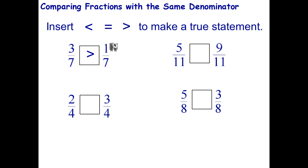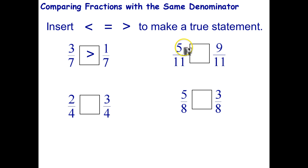Go ahead and do the remaining three questions. Let's have a look at this question here: five-elevenths compared to nine-elevenths. You're better off getting nine slices of pizza rather than five slices, since all the slices are the same. So five-elevenths is smaller than nine-elevenths.